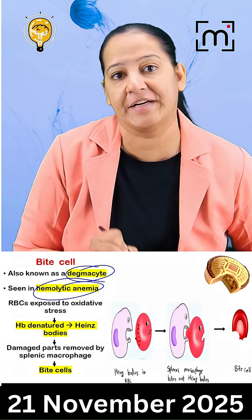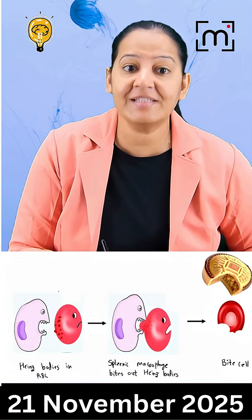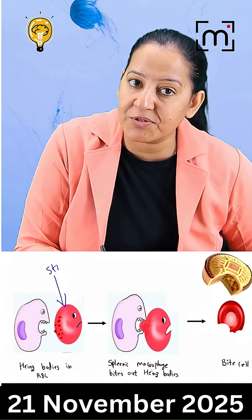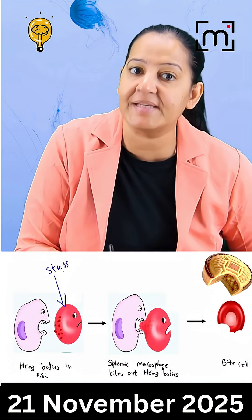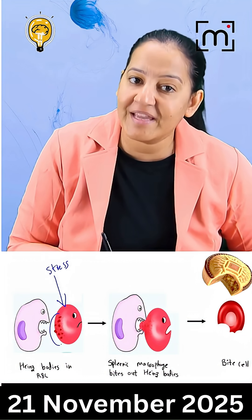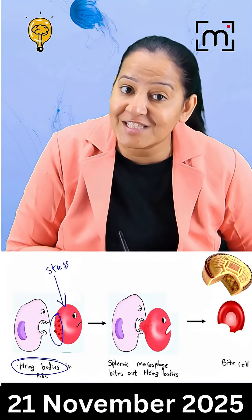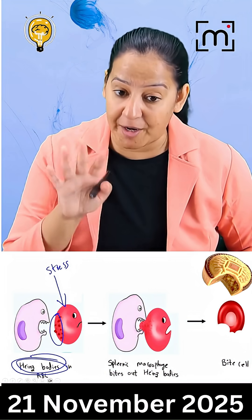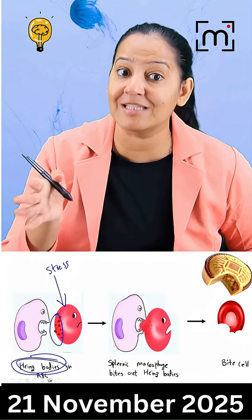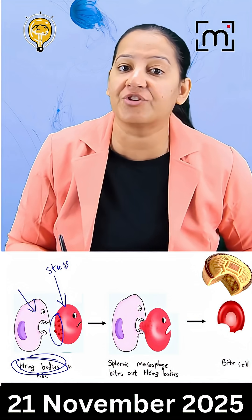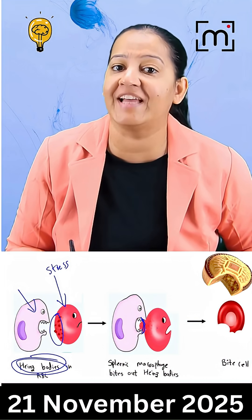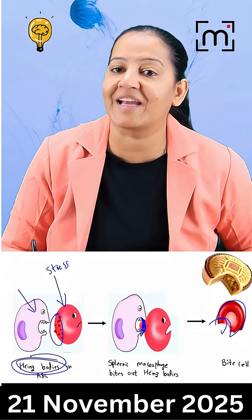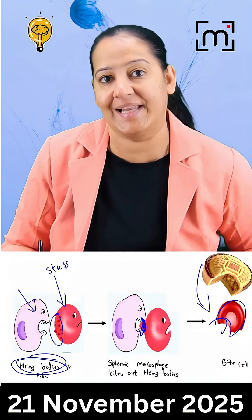They are seen in one of the hemolytic anemias. When the RBC is exposed to oxidative stress, the hemoglobin gets denatured and it is known as Heinz bodies. When such an RBC passes through the spleen, the splenic macrophage removes the Heinz bodies, and the remaining RBC looks like a bite cell.